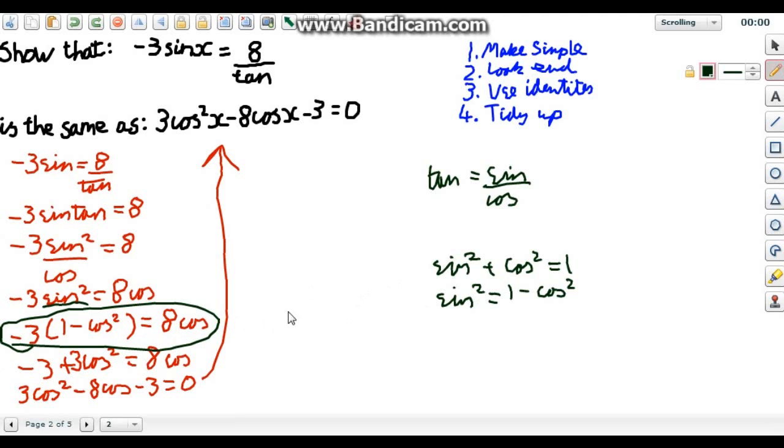Just underneath wherever you got up to write, therefore whatever you started with, which in our case was this, is equal to whatever you're trying to get. So the 3 cos squared blah de blah.